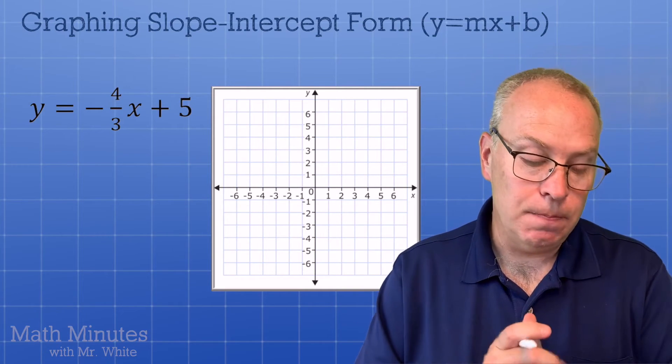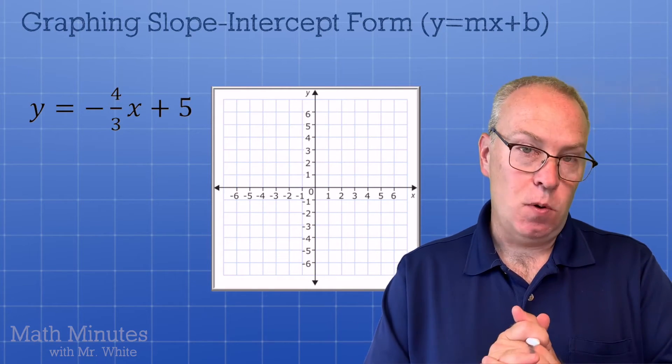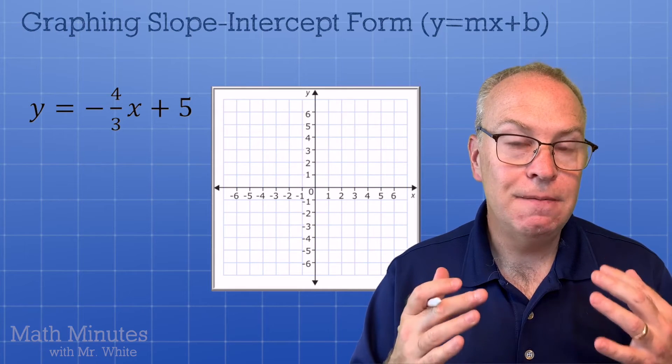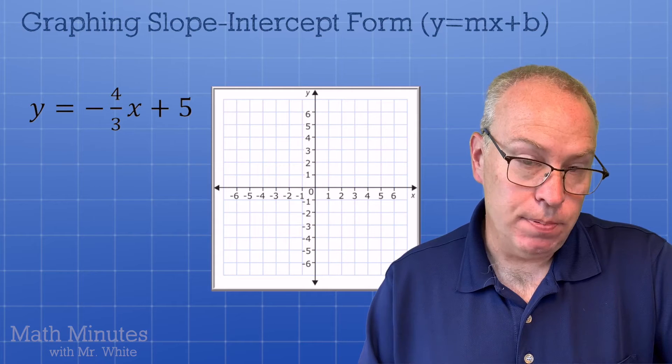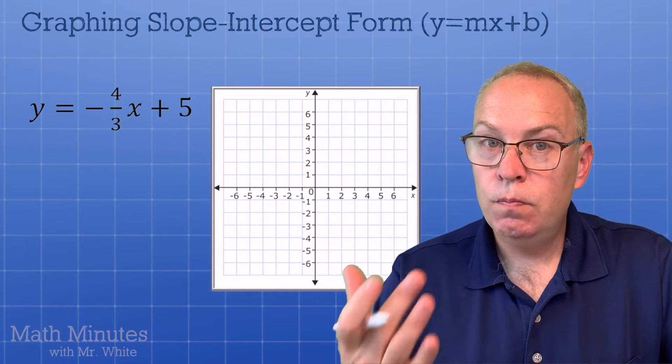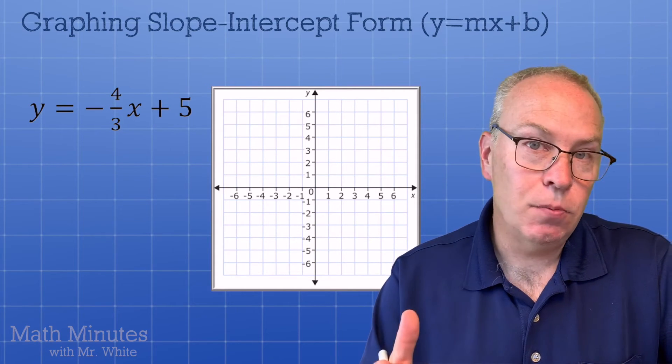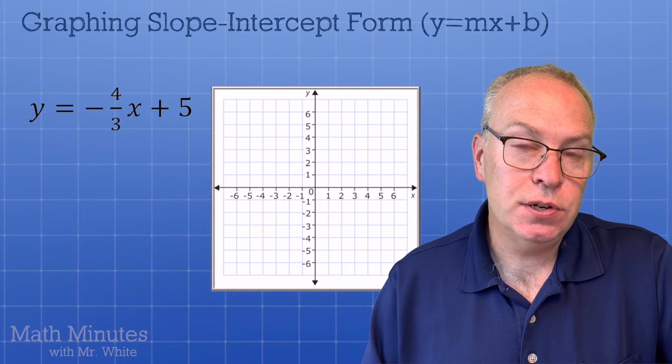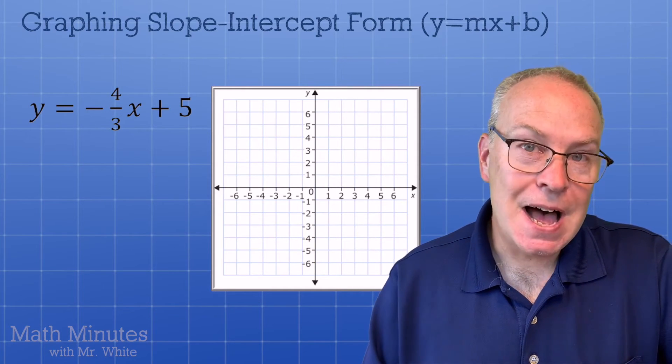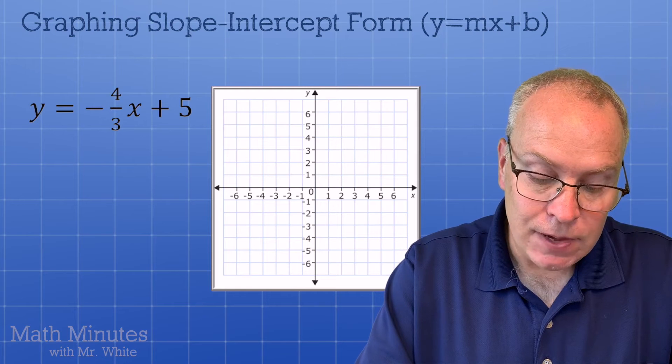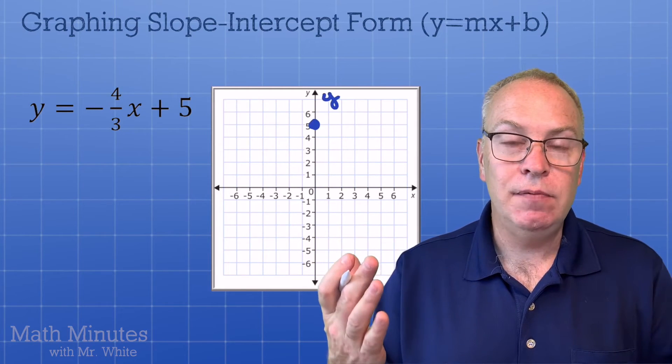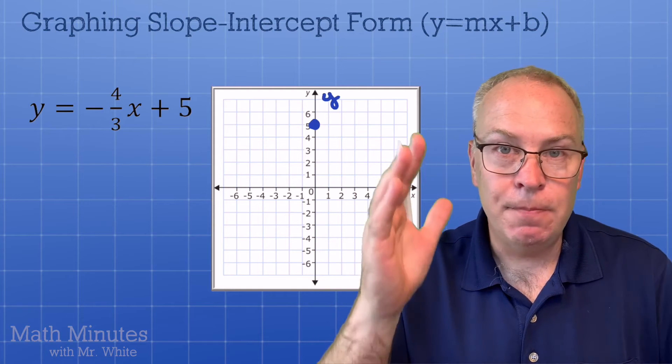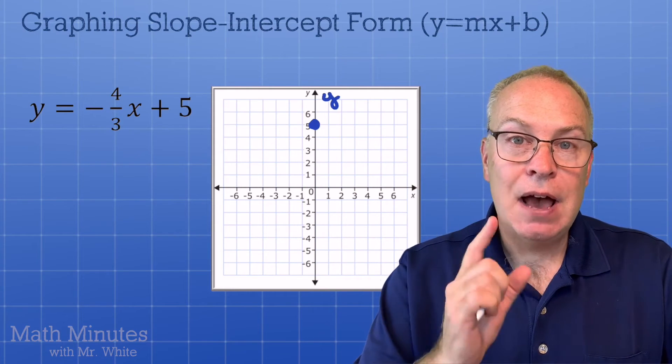Speaking of, here's the next one. y equals negative four-thirds x plus five. So we want to graph this. It's a negative slope. So the y-intercept is five. The slope is negative four-thirds. Which number do we use first? The five. We go up five and put a dot. Remember, I call that the freebie. It's like a free point they give you. Without any thought, you just go up five, put a dot.